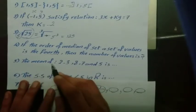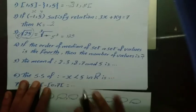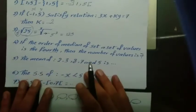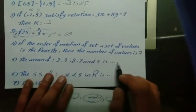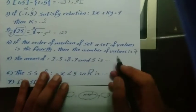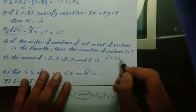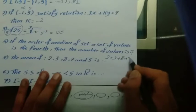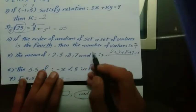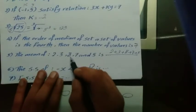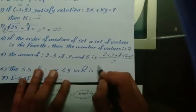Question 5: The mean of 2, 3, 8, 7, and 5. The mean of any values equals the sum of these values over the number of values. So the mean equals 2 plus 3 plus 8 plus 7 plus 5 over 5, which equals 25 over 5, equals 5.